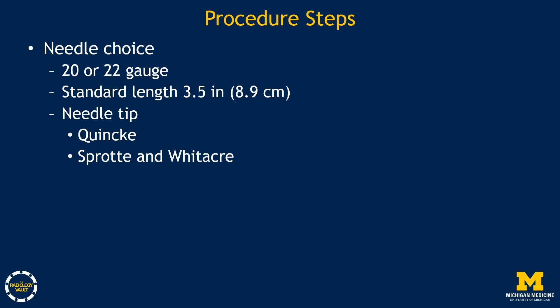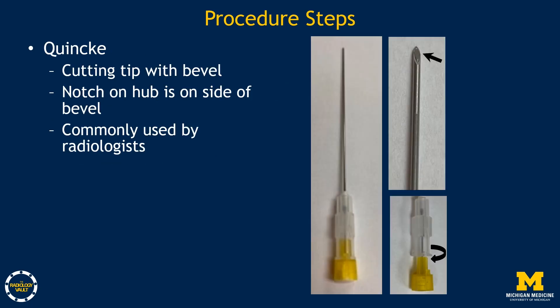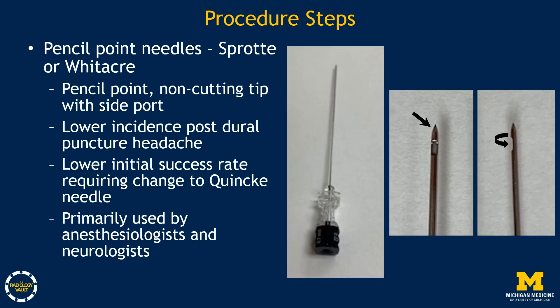There are different needle tip types available. Many neuroradiologists prefer the Quincke tip needle, which has a cutting tip with a bevel, with a notch on the hub located on the side of the bevel. There are two types of pencil point needles, Sprotte or Whitacre, which have a non-cutting tip and a side port. These are associated with a lower incidence of post-dural puncture headache, but also a lower initial success rate, requiring a change to the Quincke tip needle. These types of needles are primarily used by anesthesiologists and neurologists.